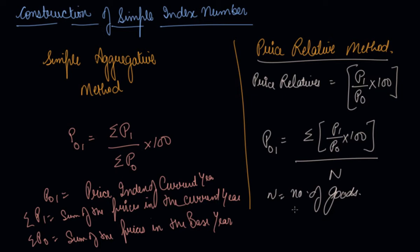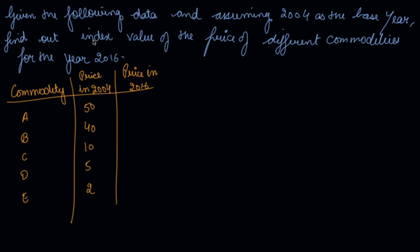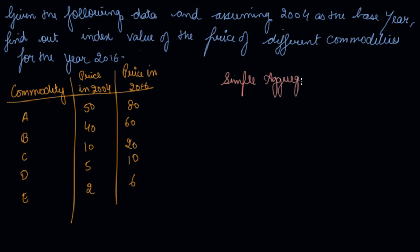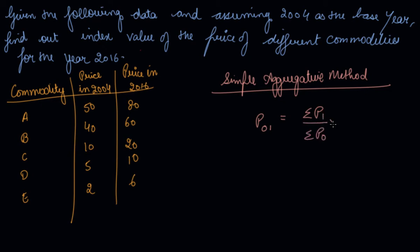Let's understand with the help of numericals. Given the following data and using 2004 as the base year, find out the price index for the year 2016. The prices of 2016 are given. Using the simple aggregated method, the formula is: price index P01 equals submission of price of the current year divided by submission of price of the base year into 100. Here 2004 is the base year, P0, and 2016 is the current year, P1.